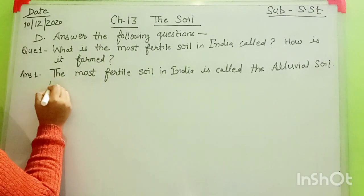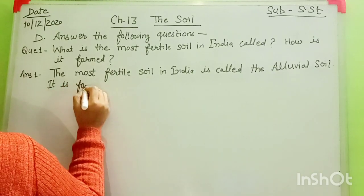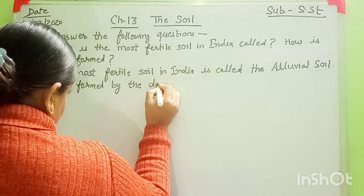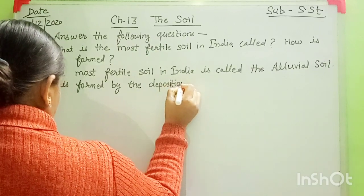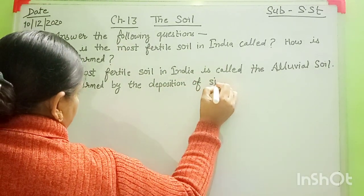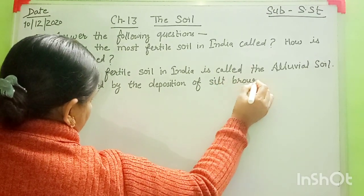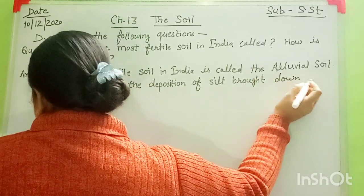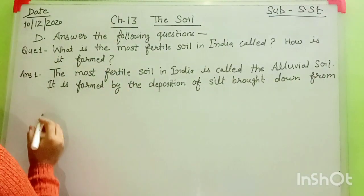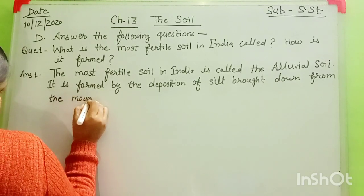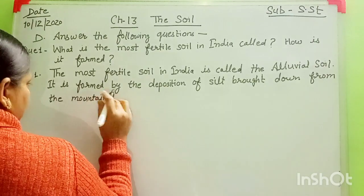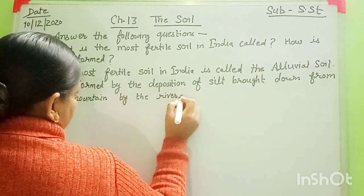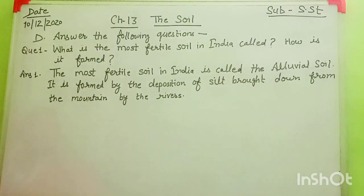Write now, everyone. It is formed by the deposition of silt brought down from the mountains by the rivers. This question is completed now — it has two parts and both are done.